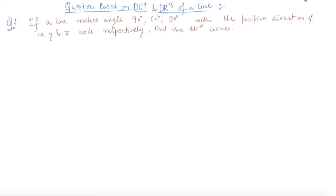Here is question number 1, which states that if a line makes an angle of 90 degrees, 60 degrees and 30 degrees with the positive direction of x, y and z axes respectively, find their direction cosines.